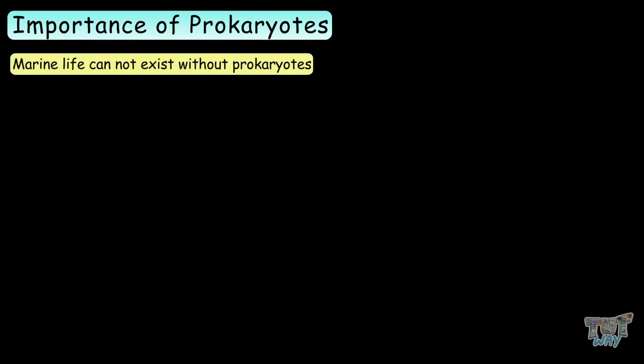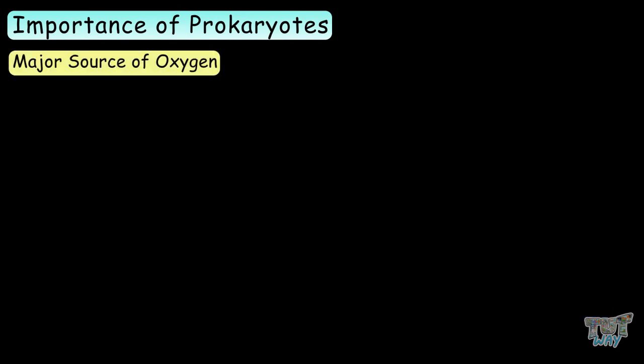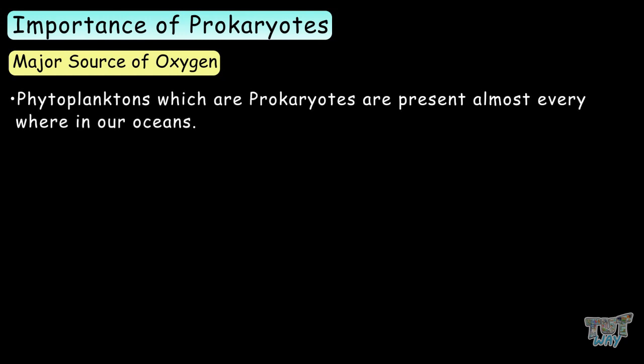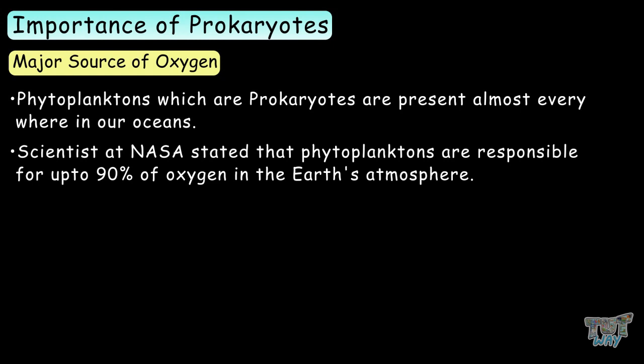Marine life cannot exist without prokaryotes. Phytoplanktons are prokaryotes that live in the ocean, and no food chain is complete without them — they are the basis of marine life on the earth. Prokaryotes are also the major source of oxygen on the earth. Scientists at NASA state that phytoplanktons are responsible for up to 90% of oxygen in the earth's atmosphere.